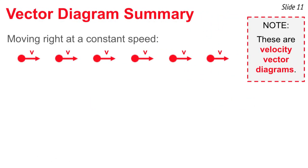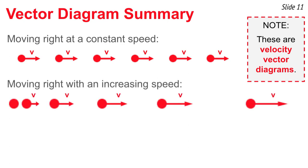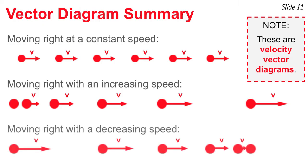Let's summarize. For a velocity vector diagram for an object moving to the right at constant speed, the size of the arrow is constant and the direction is to the right. For moving to the right with increasing speed, the size of the arrow is increasing and the direction is to the right. For decreasing speed, the size of the arrow is decreasing in length and the direction of the arrow is to the right.